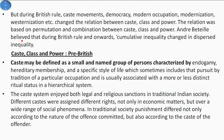During the British rule, there were a lot of caste movements because of democracy, modern occupations, modernization, and westernization. The ideologies brought by these phenomena led to changes in the relations between caste, class, and power. Therefore, the relations between these three things — caste, class, and power — became based on permutations and combinations, and the inequality in powers began to change.